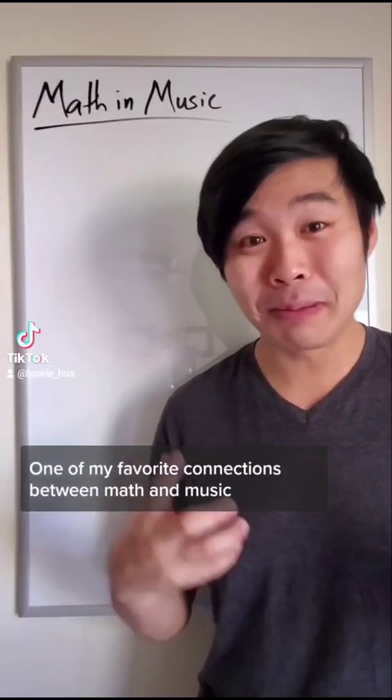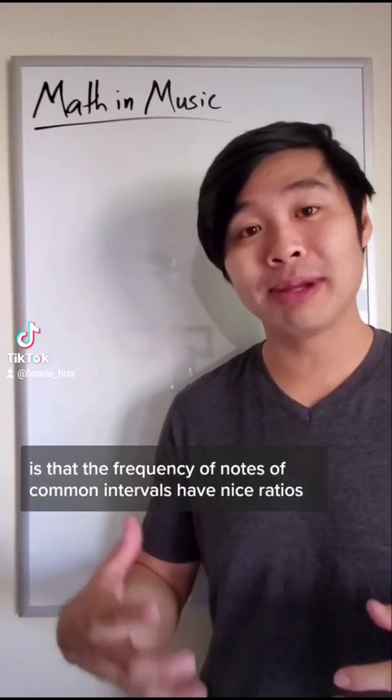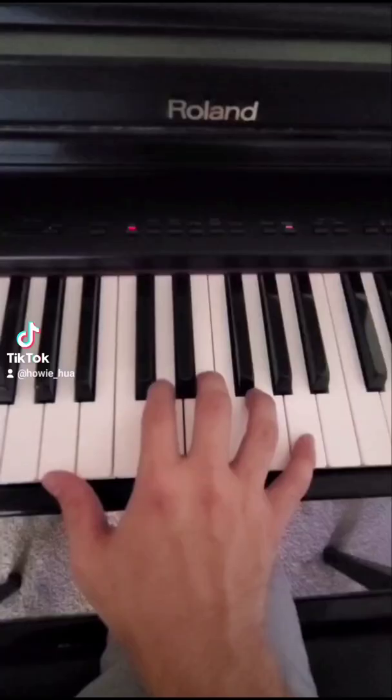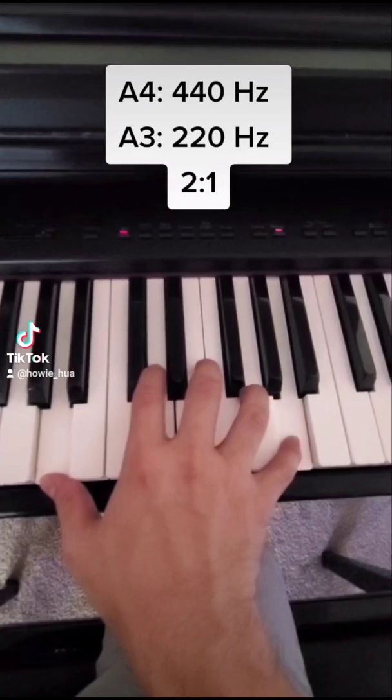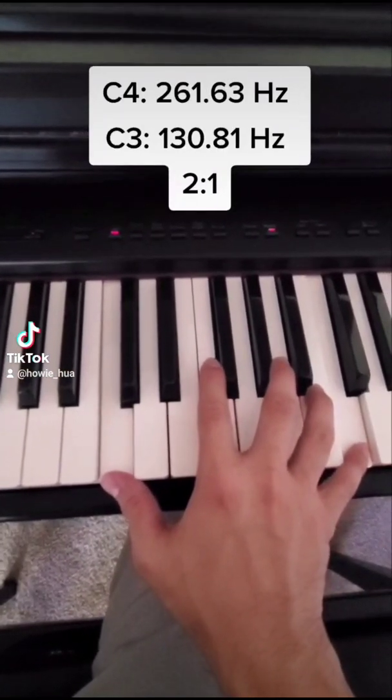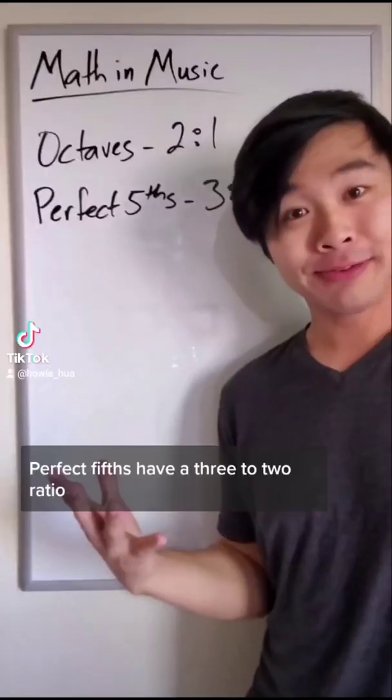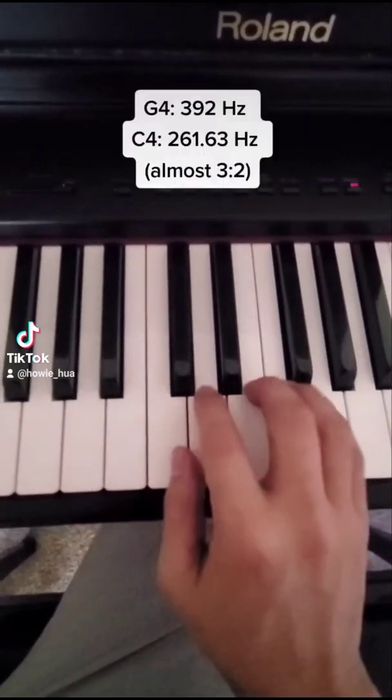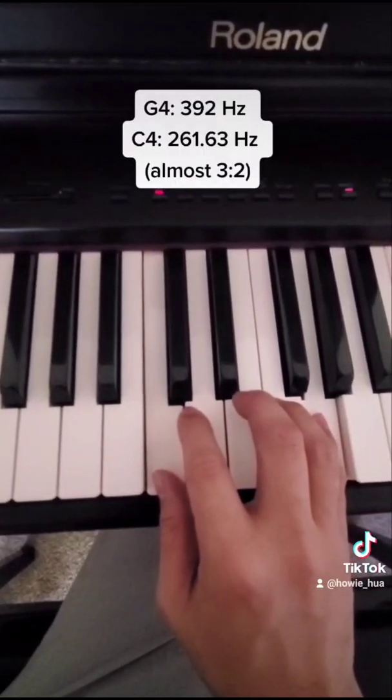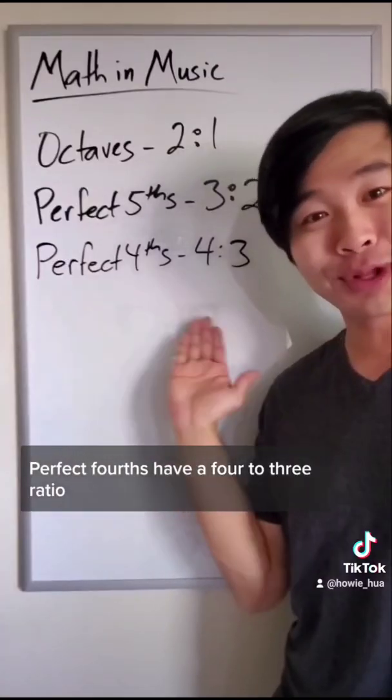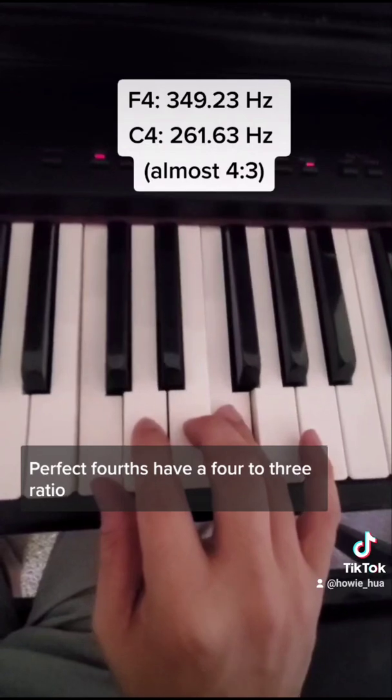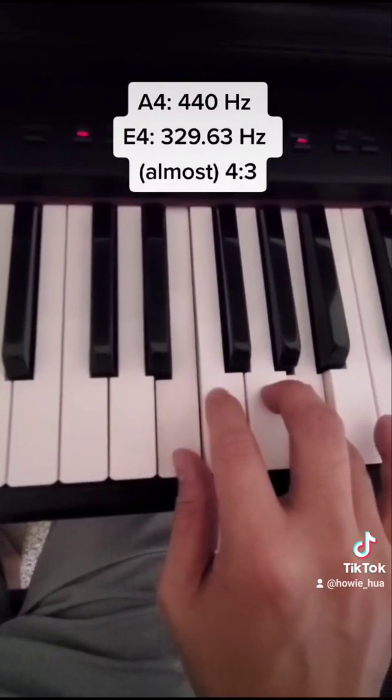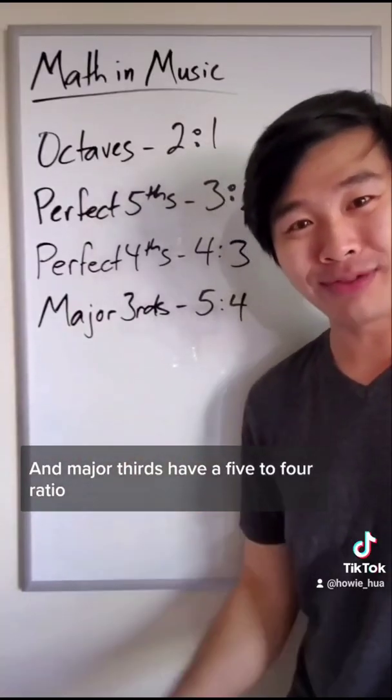One of my favorite connections between math and music is that the frequency of notes of common intervals have nice ratios. For example, the notes in an octave make a 2 to 1 ratio. Perfect fifths have a 3 to 2 ratio. Perfect fourths have a 4 to 3 ratio. And major thirds have a 5 to 4 ratio.